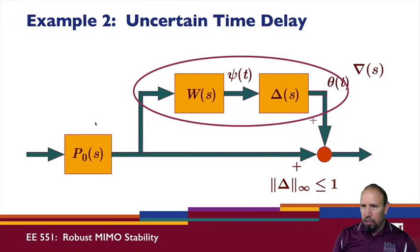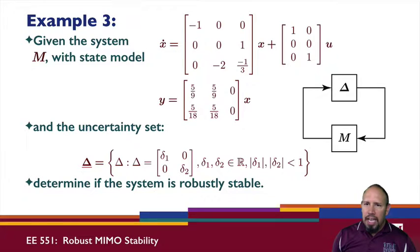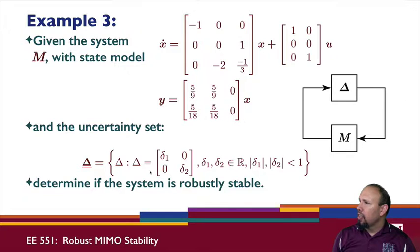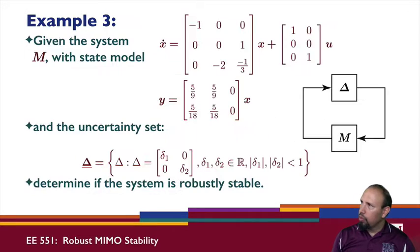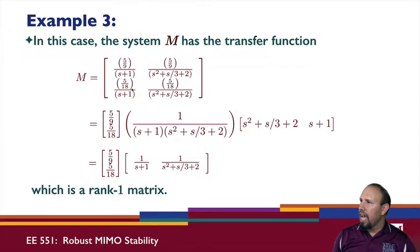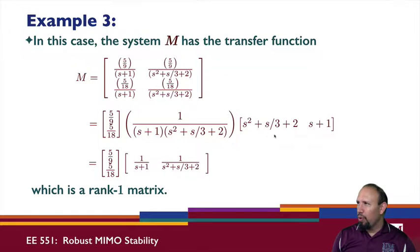Example three: I have a system given by a state-space model M, with a diagonal uncertainty set delta. We want to determine if the system is robustly stable. Because delta is diagonal, we cannot use the H-infinity norm of M alone — we have to use the structured singular value (SSV). Converting the state model to a transfer function, it happens to be factorable into a convenient form.